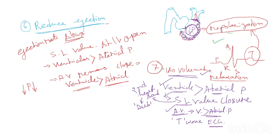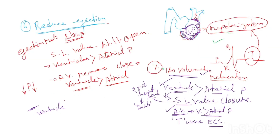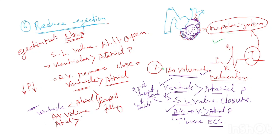As the pressure of the ventricle continues to drop and becomes lower than the atrial pressure, the AV valve opens and the rapid filling phase starts again, completing the cycle.